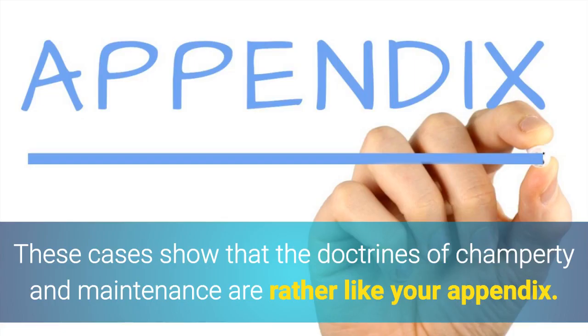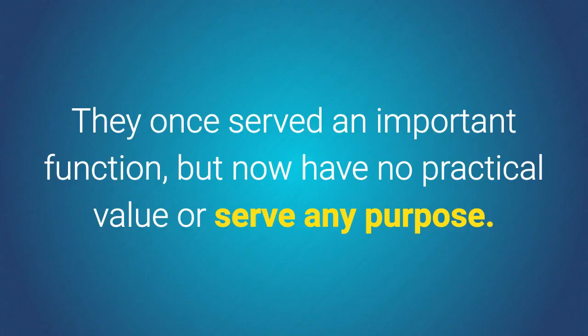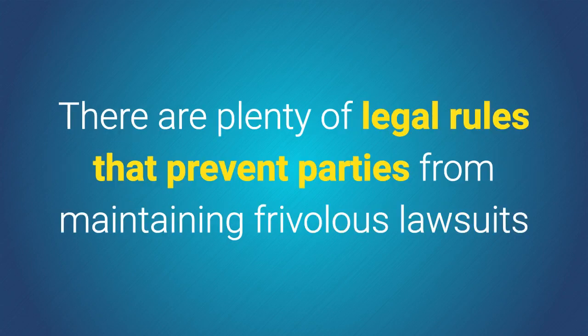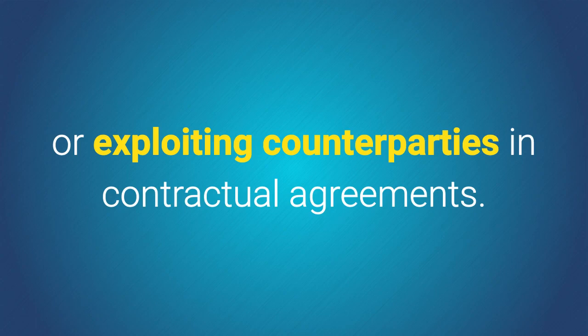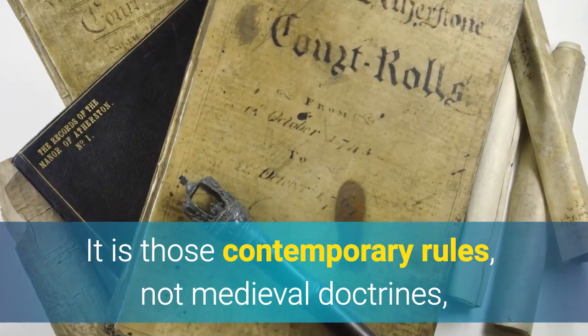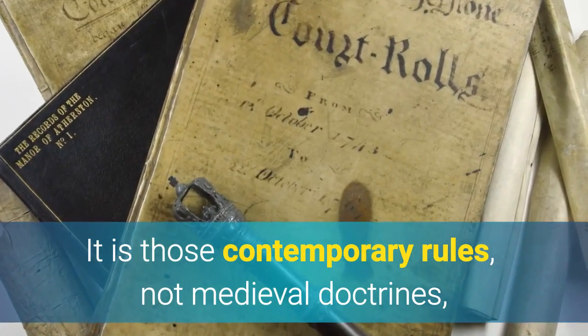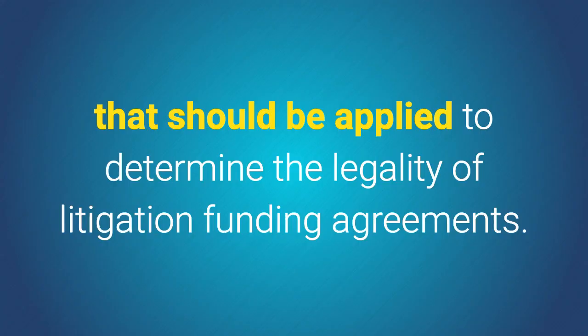These cases show that the doctrines of champerty and maintenance are rather like your appendix — they once served an important function, but now have no practical value or serve any purpose. There are plenty of legal rules that prevent parties from maintaining frivolous lawsuits or exploiting counterparties in contractual agreements. It is those contemporary rules, not medieval doctrines, that should be applied to determine the legality of litigation funding agreements.